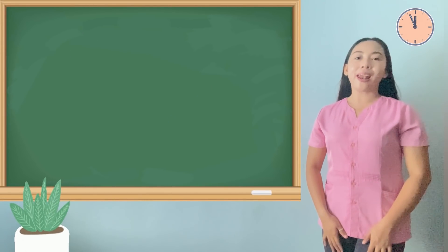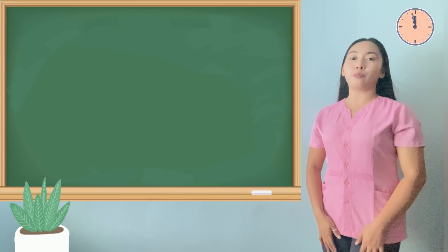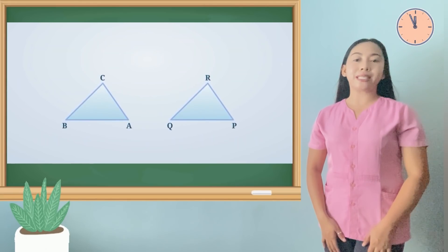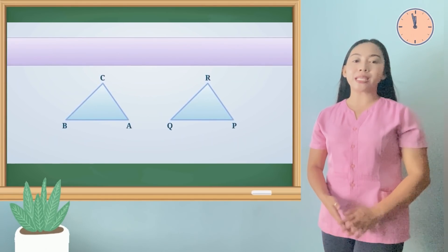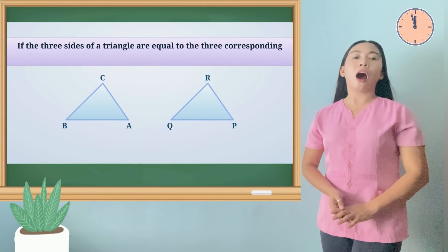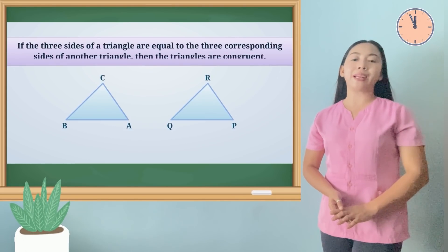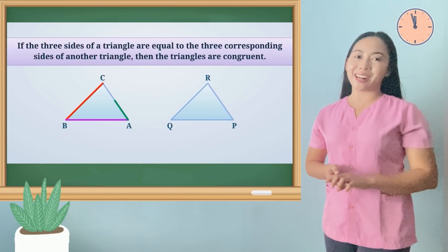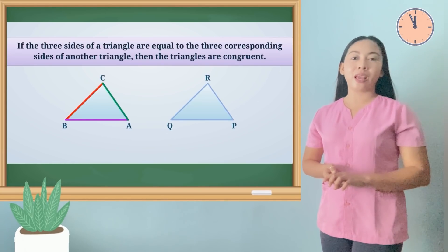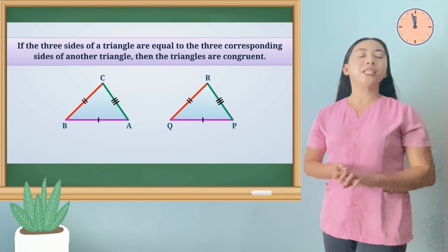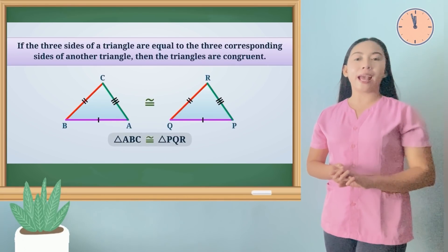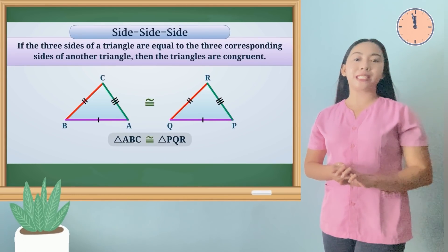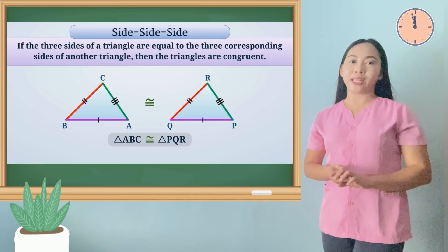Let us discuss one of the postulates on triangle congruence. We can say that if the three sides of a triangle are equal to three corresponding sides of another triangle, then the triangles are congruent. This condition is what we call the SSS or side-side-side congruence postulate.